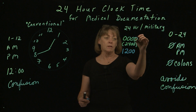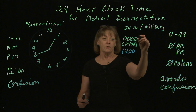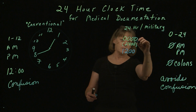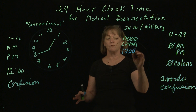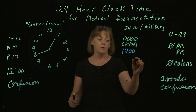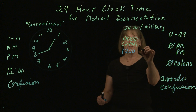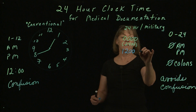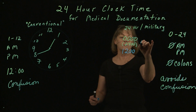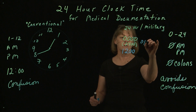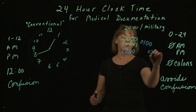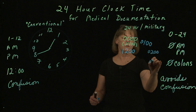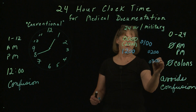After zero, it simply goes around. All of these times have four digits. So you'll have a leading zero: 0100, 0200, 0300, and on around the clock.